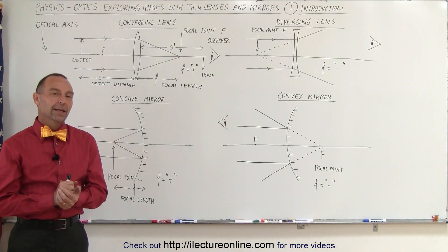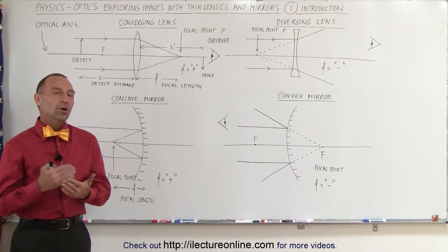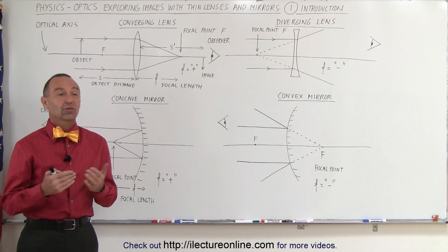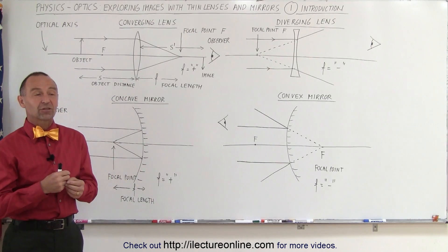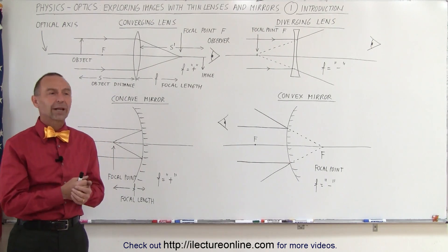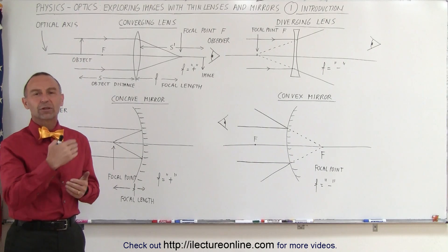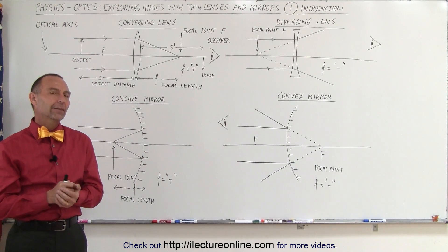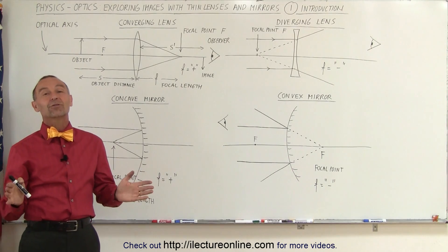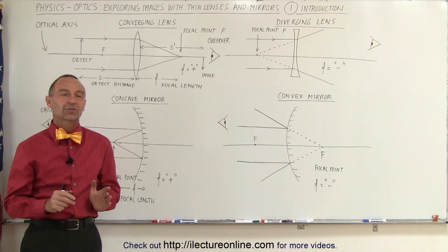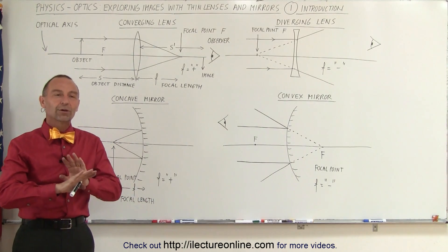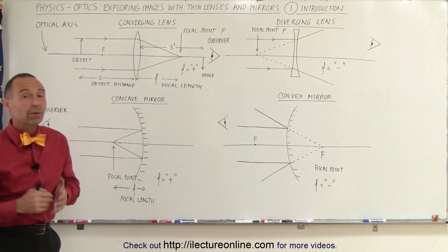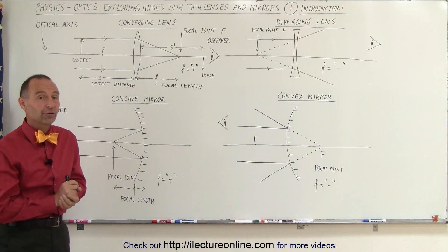Welcome to ElectroOnline. I get a lot of questions about mirrors and lenses — questions such as what happens when the object is placed at the focal point, what happens when you move it to the left, move it to the right, things like that. I thought it might be a good idea to put a set of videos together to explain some of these things in a more general perspective. So that's what we're going to do here starting with this first video.